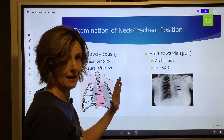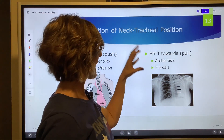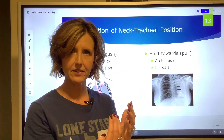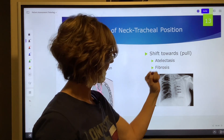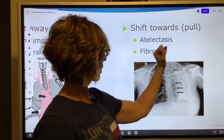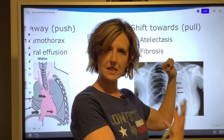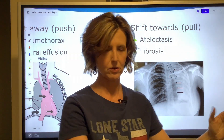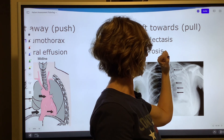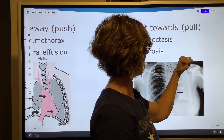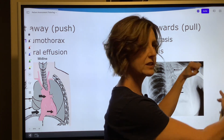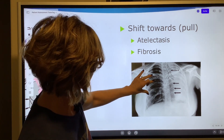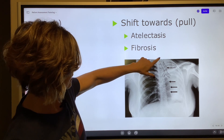Whereas atelectasis or fibrosis — that's in the alveoli, inside the lung, inside the visceral pleura. Think about it like this: anytime we have atelectasis or dense fibrosis, that lung gets heavier. That heavier lung wants to shift — it draws everything towards it, pulling towards the affected side.